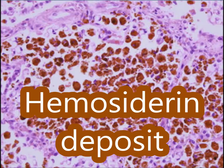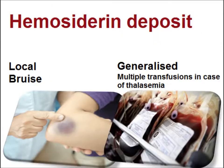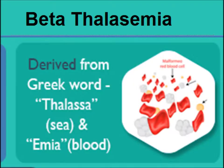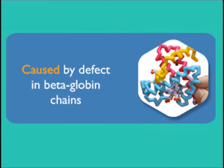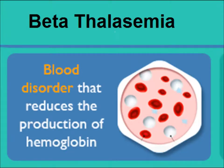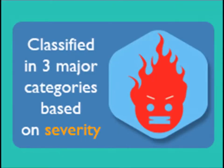Endogenous pigments are further subdivided into hemoglobin-derived and others. Today we are going to discuss hemosiderosis — hemosiderin deposition. Commonly, multiple transfusions in the case of thalassemia lead to hemosiderosis. Beta thalassemia is a blood disorder due to the reduced beta hemoglobin chain. A defect in the beta globin chain leads to deformed RBCs, and there is destruction of the RBCs. There are different categories based on severity.